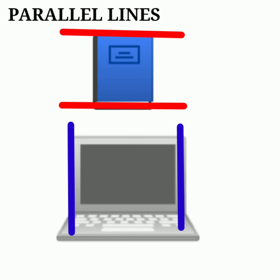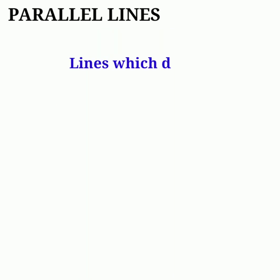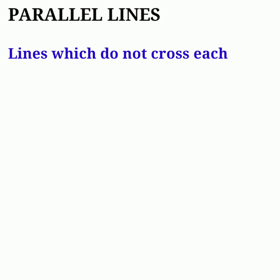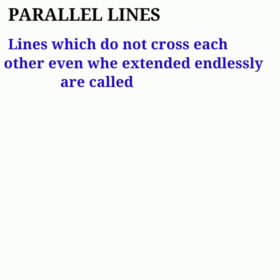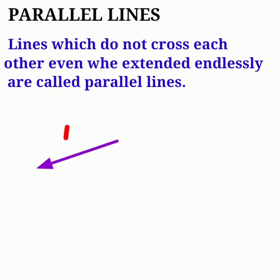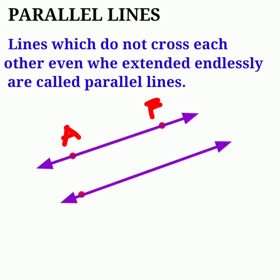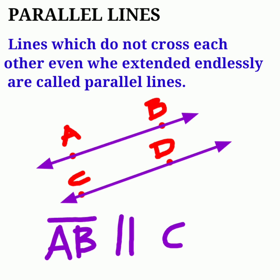Opposite edges of a laptop are also examples. Lines which do not cross each other even when extended endlessly are called parallel lines. Lines AB and CD do not cross each other; they are always the same distance apart. Line AB is parallel to line CD.